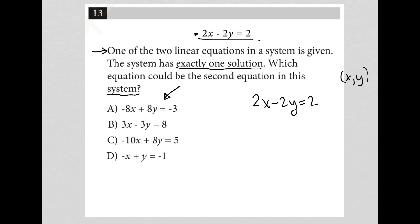So my first thought here would actually just be to plug in answers. That would be the strategy that I go with. By doing that, I'd start off with choice A. I put my negative 8x plus 8y equals negative 3, just plug that in, and say okay, well now I have a system of equations. I'm going to solve this by elimination.